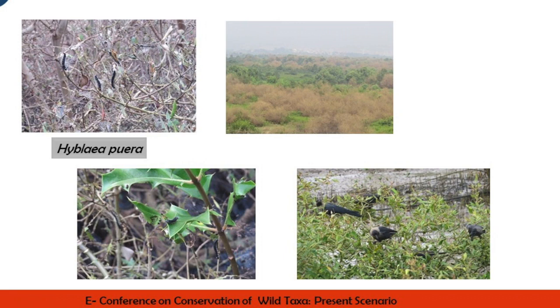One more interesting report: the interaction of Hyblaea puera with Avicennia was recorded earlier by several workers, but for the first time we have observed Hyblaea puera on Acanthus species. This species mainly depends on teak, and Avicennia marina is the alternate host. When the entire patch of Avicennia is defoliated it shifts onto Acanthus ilicifolius.